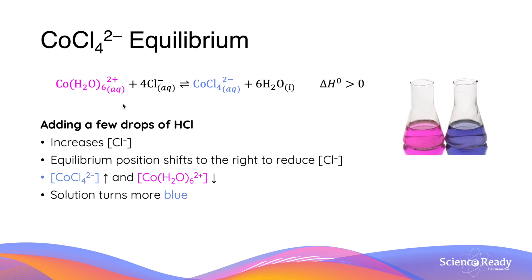The first equilibrium system we'll discuss is a reversible reaction between hydrated cobalt ion and cobalt chloride, which is in a dehydrated form as the water molecules have been removed as the other product. The most important thing to keep in mind is that hydrated cobalt has a pink appearance, as shown by the first flask, and the dehydrated form of cobalt chloride has a blue appearance. Both colours are very distinct and it is very easy for students to distinguish between the two different forms.